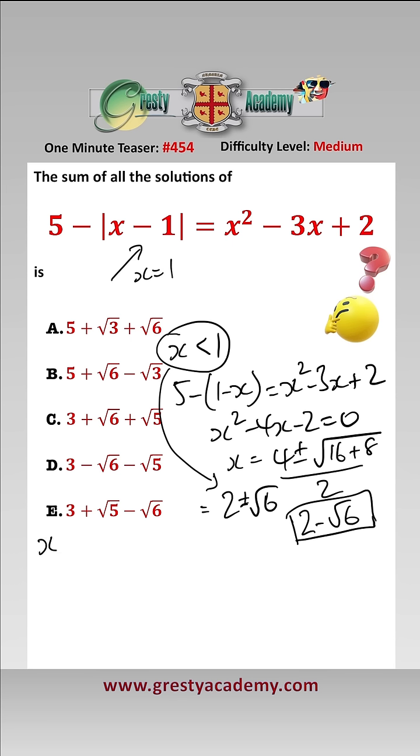Now let's look at the other region, x greater than or equal to 1. Therefore this equation becomes 5 minus brackets x minus 1 equals x squared minus 3x add 2.